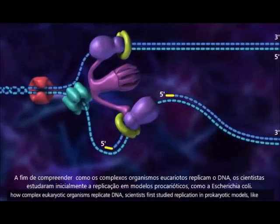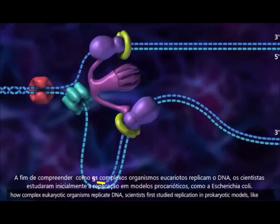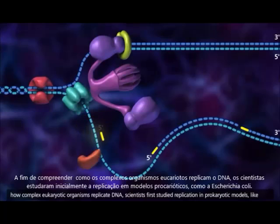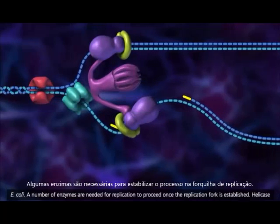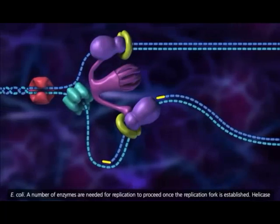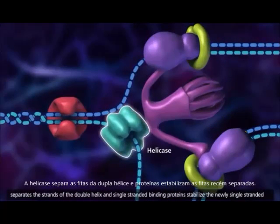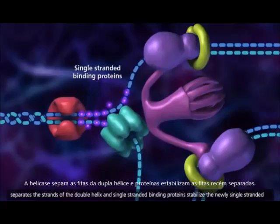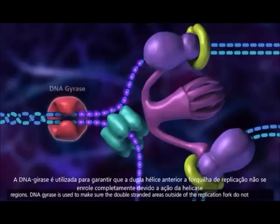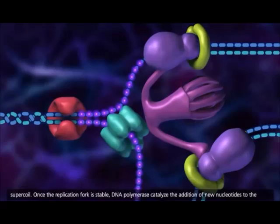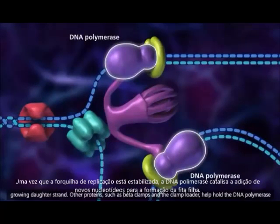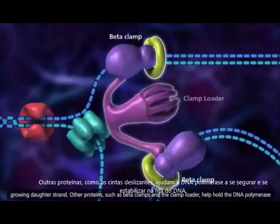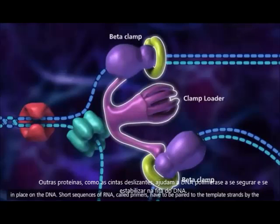In order to understand how complex eukaryotic organisms replicate DNA, scientists first studied replication in prokaryotic models like E. coli. A number of enzymes are needed for replication to proceed once the replication fork is established. Helicase separates the strands of the double helix, and single-stranded binding proteins stabilize the newly single-stranded regions. DNA gyrase is used to make sure the double-stranded areas outside of the replication fork do not supercoil. Once the replication fork is stable, DNA polymerase catalyzes the addition of new nucleotides to the growing daughter strand. Other proteins, such as beta-clamps and the clamp loader, help hold the DNA polymerase in place on the DNA.